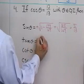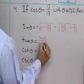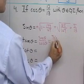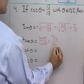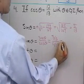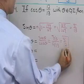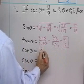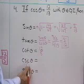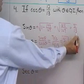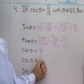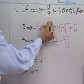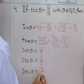Tangent theta, using the ratio identity sine over cosine, is 5 thirteenths divided by 12 thirteenths, which equals 5 twelfths. Cotangent theta is the reciprocal of tangent, so it must be 12 fifths. Cosecant theta is the reciprocal of sine theta — sine is 5 thirteenths, so cosecant theta is 13 fifths. And secant theta is the reciprocal of cosine theta — cosine is 12 thirteenths, so secant must be 13 twelfths.